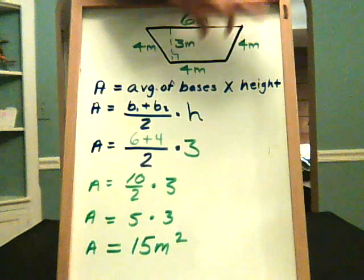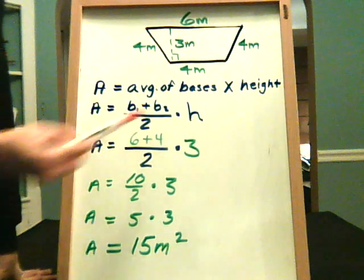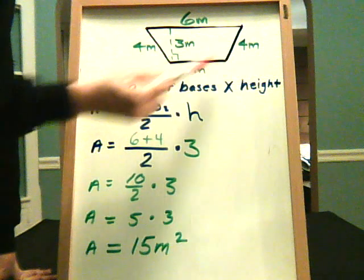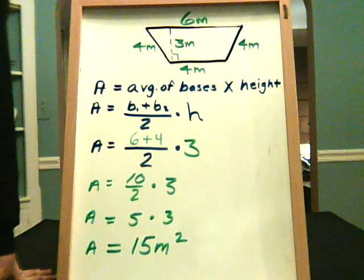It's literally how many squares can you fit inside, as opposed to perimeter, which is a measurement around the outside, which would be 6 plus 4 is 10, 4, 4 is 18 altogether.